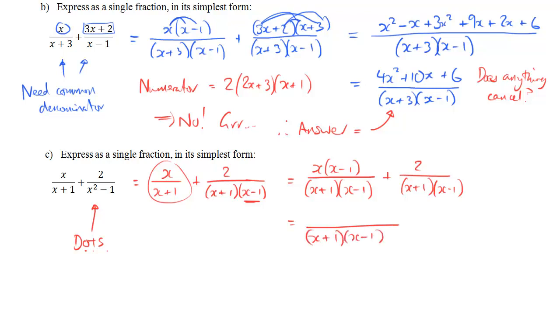And for the numerator, I simply add the numerators, so I'll multiply out as I do it. So x times x is x squared. x times minus 1 is minus x. And add the two.